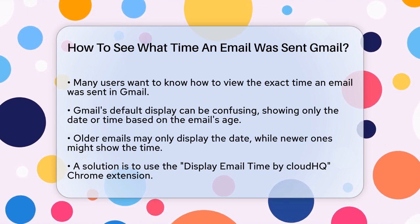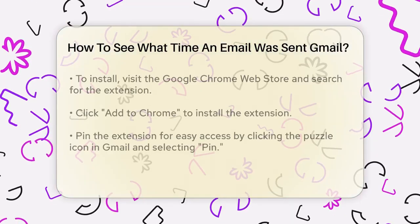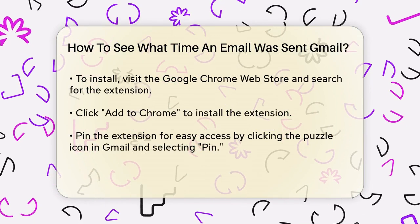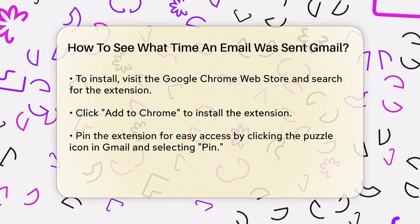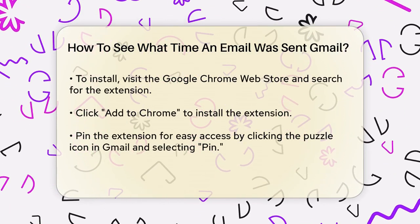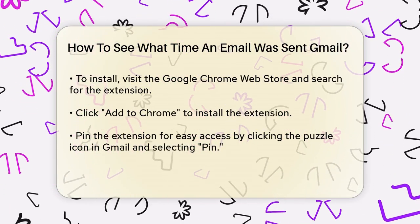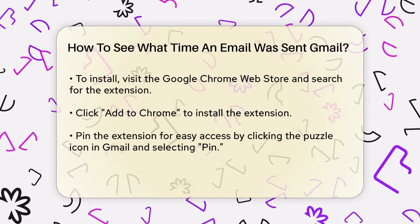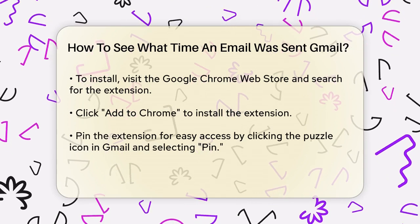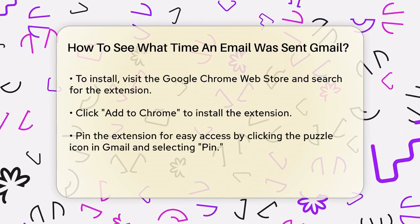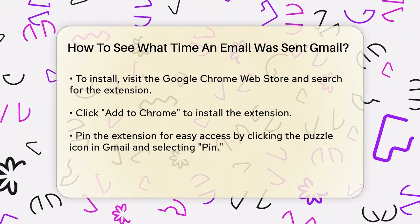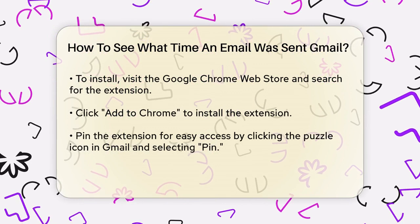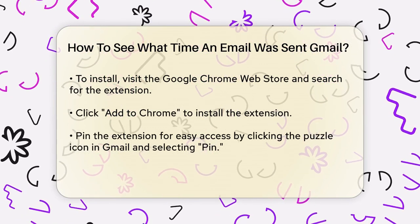To solve this, you can use a Chrome extension called Display Email Time by CloudHQ. Here's how you can set it up. First, head over to the Google Chrome Web Store and search for Display Email Time by CloudHQ. Once you find it, click the Add to Chrome button to install the extension.